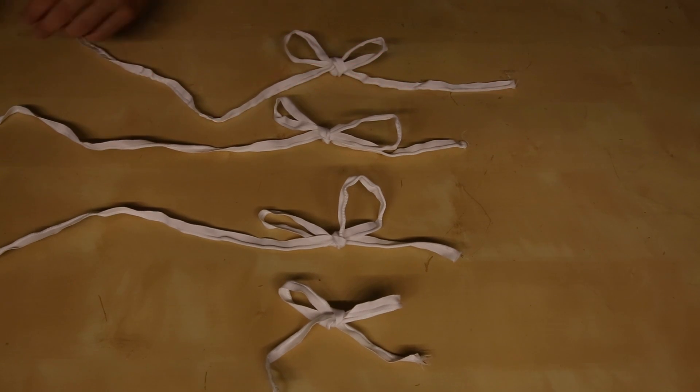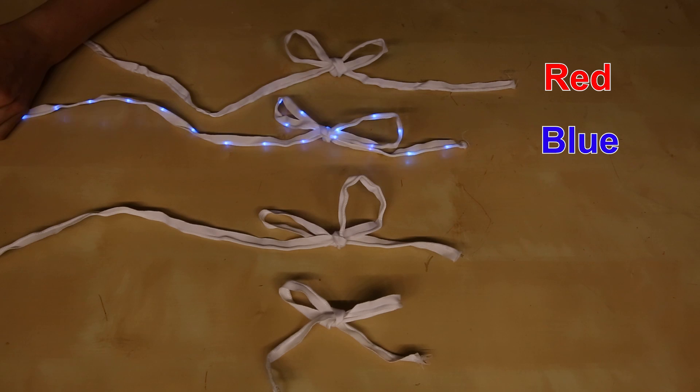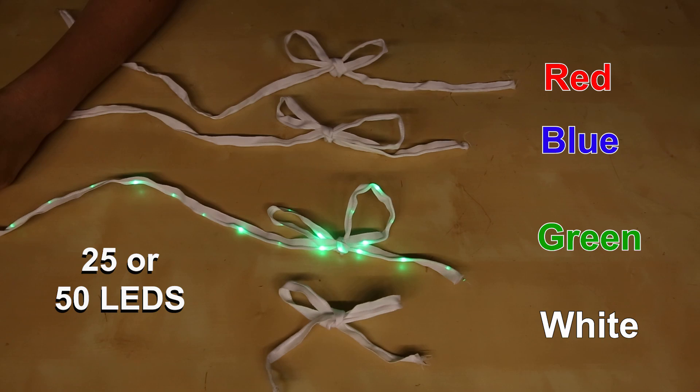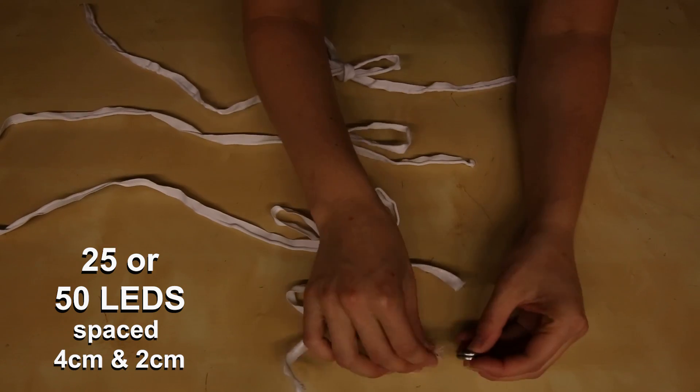We're offering the Sewable LED Ribbon in four colors: red, blue, green, and white. Each ribbon has either 25 or 50 LEDs, spaced 4 cm and 2 cm respectively.